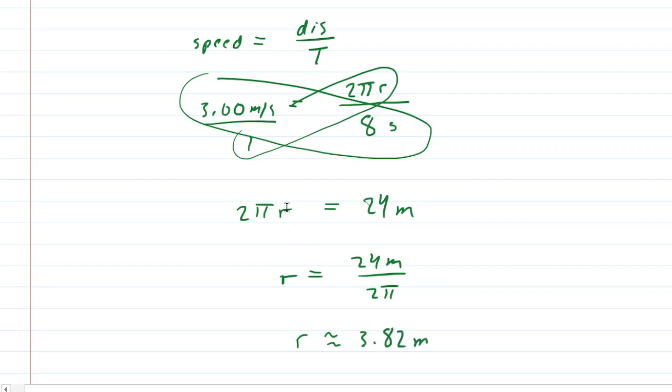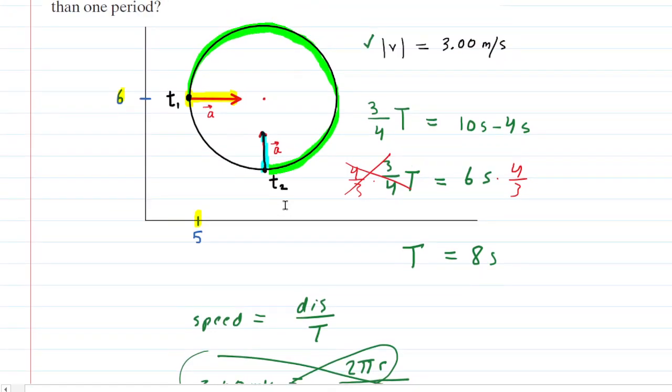Now that we have the radius, we can go back to the picture. We know that the distance from the position marked T1 all the way to the center, so this distance right here, well, that would be the radius of the circle, which we just determined to be 3.82 meters. Now we're in business because the whole point of the question was to figure out the xy coordinates of the center.